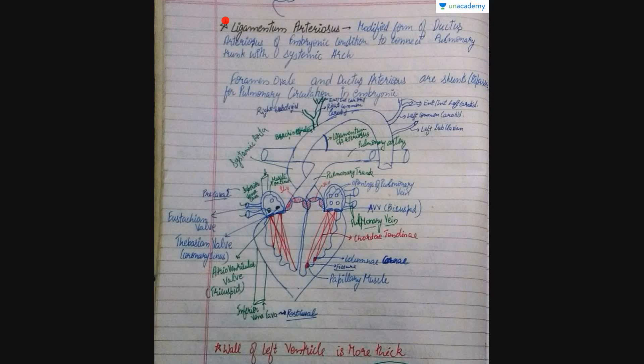In embryonic conditions we have a ductus arteriosus, which provides blood directly from the pulmonary artery into the aorta. This prevents blood from going into the lungs because the lungs are not yet developed and no pulmonary circulation is needed. After birth, the ductus arteriosus becomes the ligamentum arteriosum.